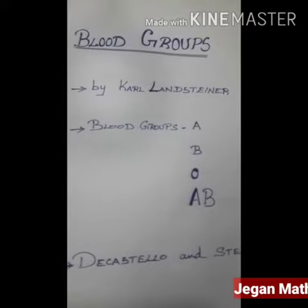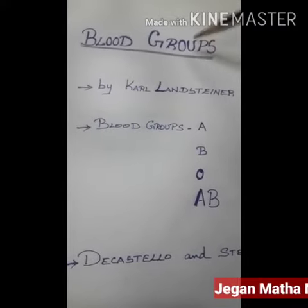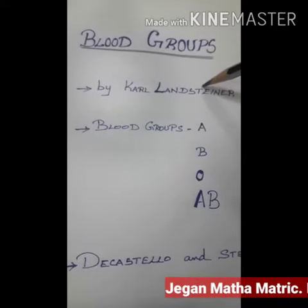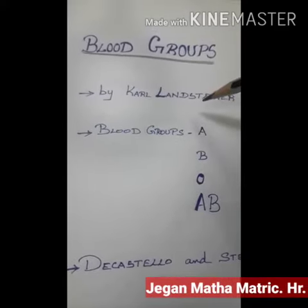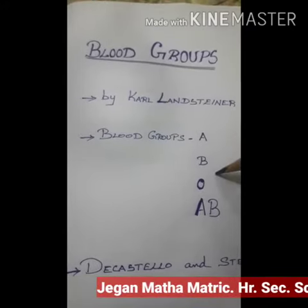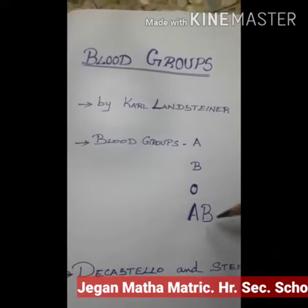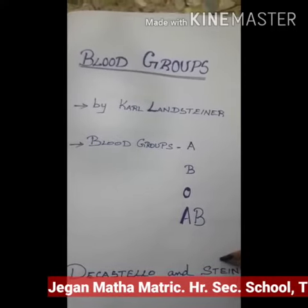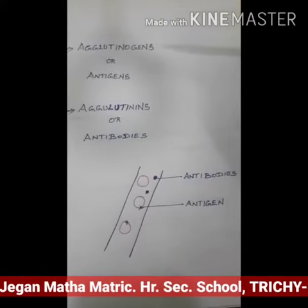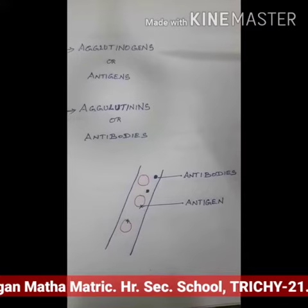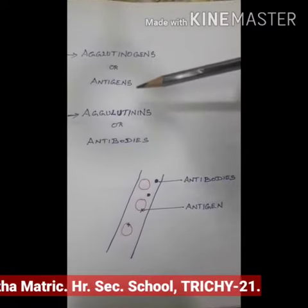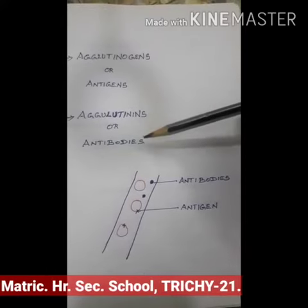We are going to see about blood groups. The concept of blood groups was developed by Carl Landsteiner. He identified the blood groups A, B, O. AB blood group was recognized by Castello and Steny. Human blood contains certain specific substances called agglutinogens or antigens, and agglutins or antibodies.